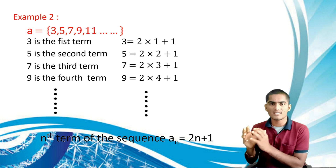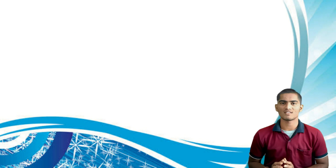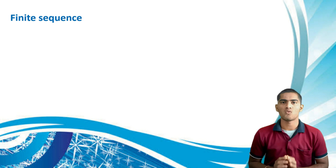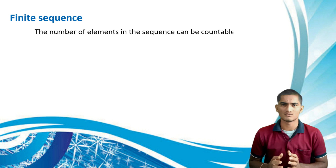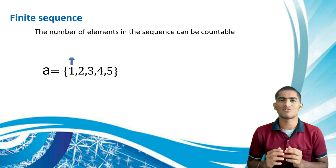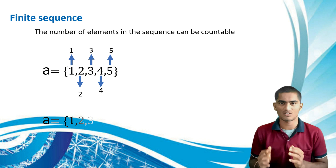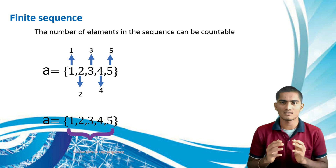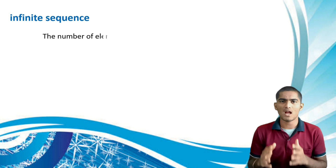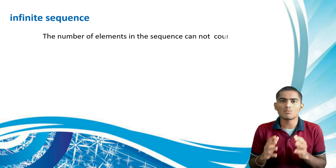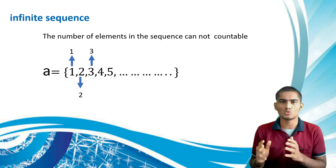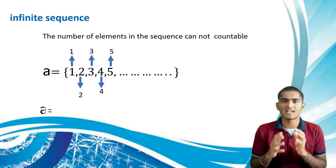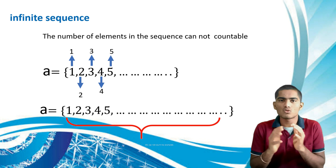Next are finite and infinite sequences. A finite sequence has a countable number of elements — for example, 1, 2, 3, 4, 5 has five elements you can count. An infinite sequence has elements that cannot be counted — for example, the sequence of natural numbers 1, 2, 3, 4, 5, and so on.